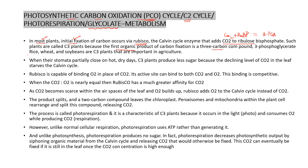For example, rice, wheat, and soybean are important C3 plants. But under hot and dry conditions, when their stomata are partially closed, C3 plants are not able to carry out the normal biosynthetic pathway. As a result, carbon dioxide levels decline.